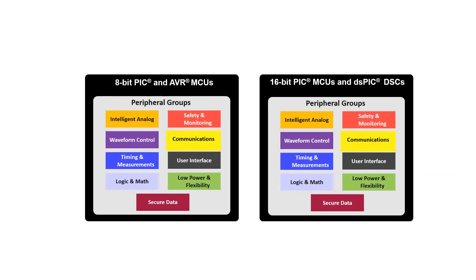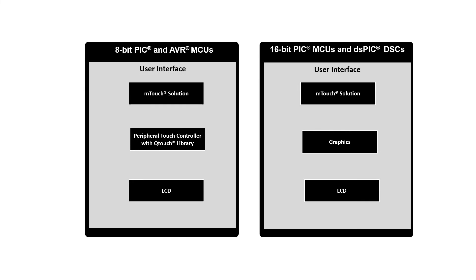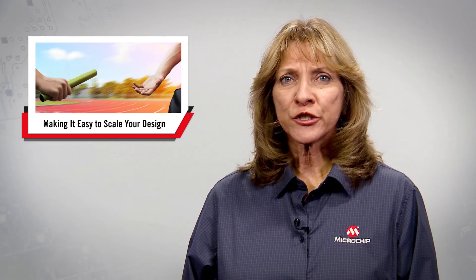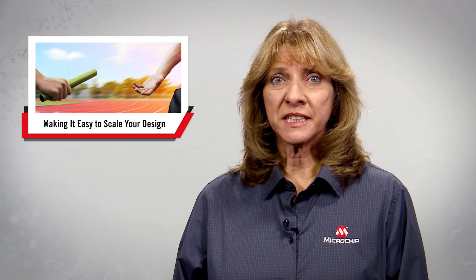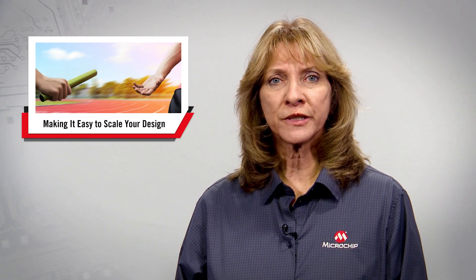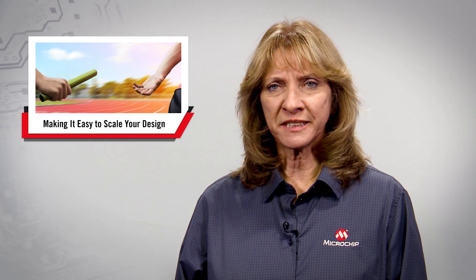Finally, human interface applications can be made easier using integrated capabilities on both architectures, including segmented LCD controllers and capabilities to facilitate capacitive touch sensor development. Select 16-bit devices further feature a graphics controller module specifically designed to directly interface with display glasses and individually control pixels in the screen. These capabilities on Microchip Technology's 8-bit and 16-bit microcontrollers and digital signal controllers, along with a focus on easy-to-use software and hardware development tools, provide a flexible and streamlined solution to help optimize the design process.